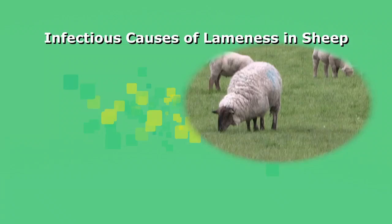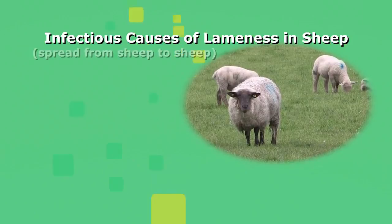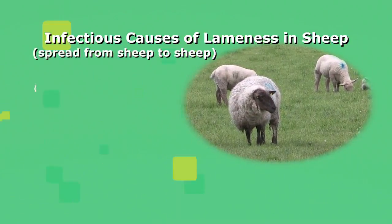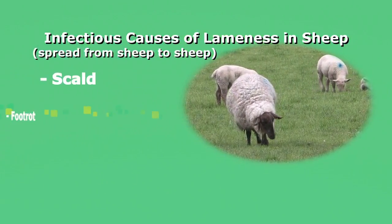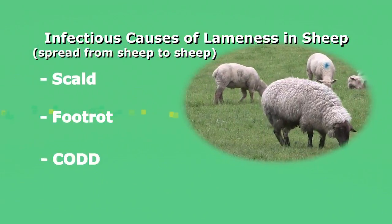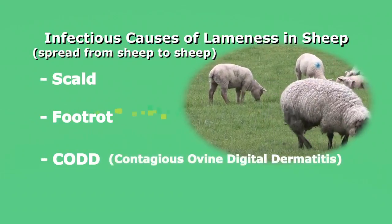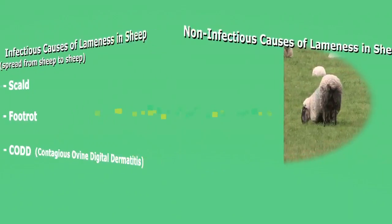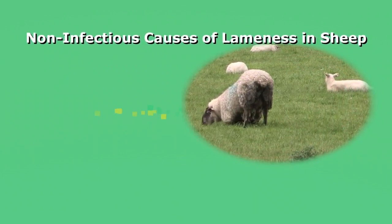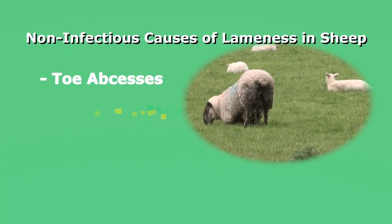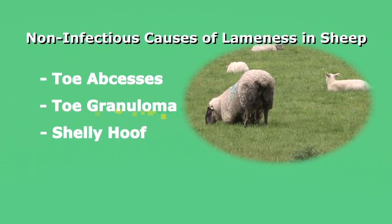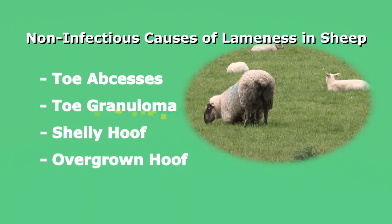The main causes of lameness in any flock can be split into two different categories. Infectious causes — these are spread from sheep to sheep — are scald, foot rot, and CODD (contagious ovine digital dermatitis). The non-infectious causes of lameness in sheep are toe abscesses, toe granuloma, shelly hoof, and overgrown hooves.